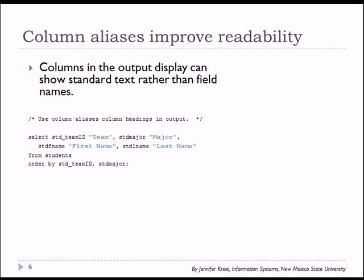Column aliases are a good way to improve readability, because actual column names in a table can be fairly esoteric, frequently abbreviated. You can specify a column alias. Select student team ID followed, without any comma, in double quotes, which may or may not be necessary, the word team. Then student major has a column heading or column alias of major.